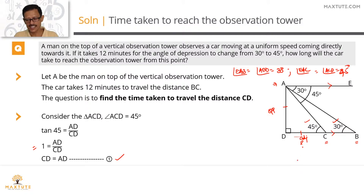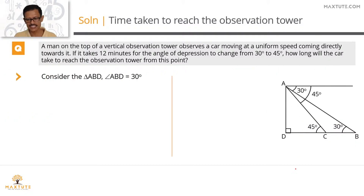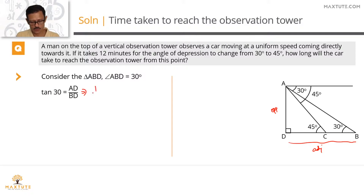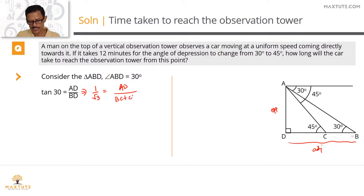Now let's look at right triangle ABD. Angle ABD equals 30 degrees. AD is the opposite side and BD is the adjacent side. Tan 30 equals AD divided by BD. Tan 30 equals 1 by root 3, and BD is BC plus CD. Cross multiplying, we get BC plus CD equals root 3 times AD.